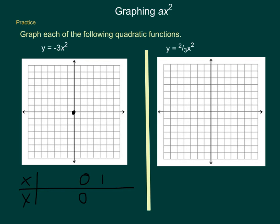The axis of symmetry is x equals 0. My vertex is that point 0, 0. Next, I'll use 1 and 2, negative 1 and negative 2. If I substitute in 1 to my function, 1 squared is 1, 1 times negative 3 is negative 3. So I get a point located about here. Next, if I substitute in a 2, 2 squared is 4, 4 times negative 3 is negative 12, which is going to be well off my graph.